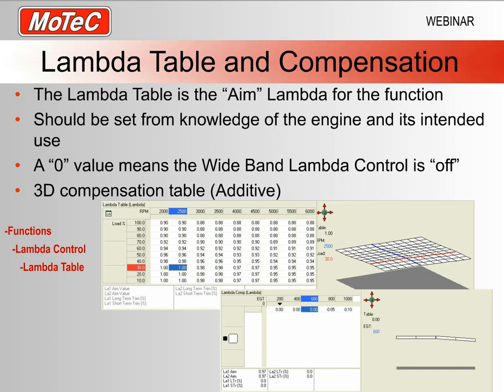If you put a zero anywhere in the lambda table, that means you want the function off at that point. As a rough guide, you might have zero around idle — once you've tuned your idle, you don't need closed-loop lambda control there. Or maybe you don't want the lambda control dealing with all your high-boost areas, so it might only be on for light-load cruising, like your 60 to 100 percent throttle area.